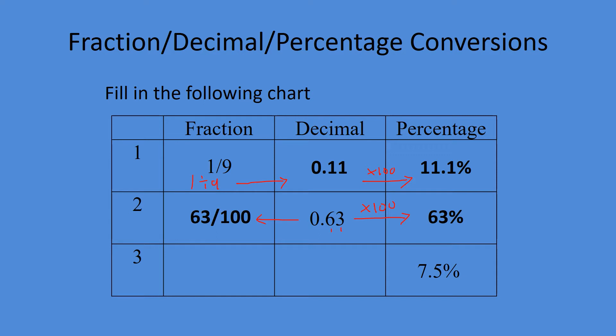Our last example: 7.5%. This time we're going to decimal, so we'll need to divide by a hundred. That comes out to 0.075. We've got the tens, hundreds, thousands position. We're just going to have a fraction of 75 over a thousand.